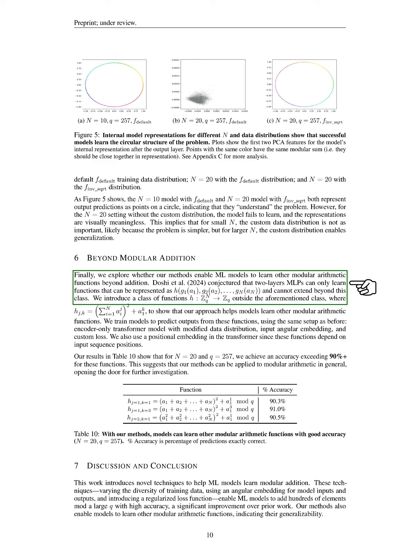Section: Beyond Modular Addition. In this section, we explore whether our methods allow machine learning models to learn other modular arithmetic functions beyond just addition. We propose that two-layer multi-layer perceptrons, or MLPs, can only learn functions represented in a specific way, but we introduce a new class of functions that falls outside this limitation.